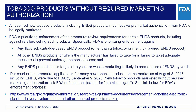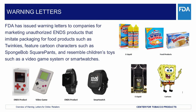In addition, and per court order, pre-market applications for many new tobacco products on the market as of August 8, 2016, including ENDS, were due to FDA by September 9, 2020. Such products still on the market that do not have pre-market applications submitted risk FDA enforcement, except for premium cigars. Examples of FDA enforcement towards ENDS products, including e-liquids, which lack pre-market authorization, include warning letters issued to companies for marketing unauthorized ENDS products that imitate packaging for food products like Twinkies, feature cartoon characters like SpongeBob SquarePants, and resemble children's toys, such as a video game system or smartwatches.